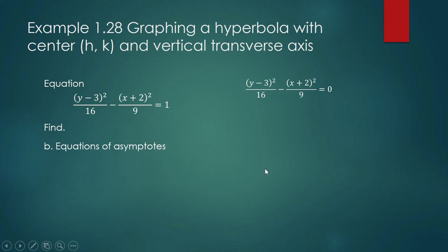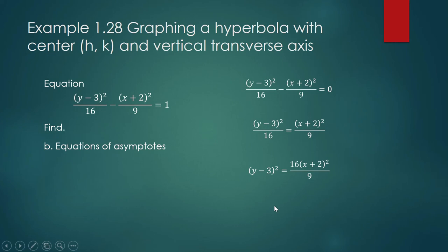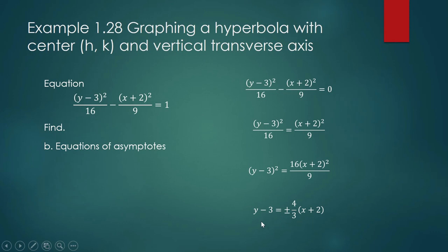Let us isolate y minus 3 by transposition. Then take the square root of both sides: y minus 3 equals plus or minus the square root of 16 over 9, which is plus or minus 4 over 3, times (x plus 2). These are already the equations of your asymptotes, written in point-slope form. Your asymptotes intersect at the center with coordinates negative 2, 3. One slope is 4 over 3 and the other is negative 4 over 3.